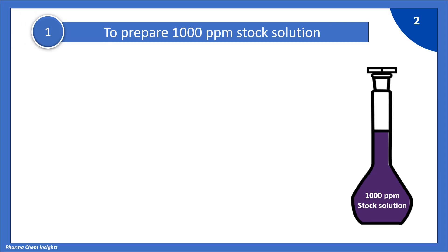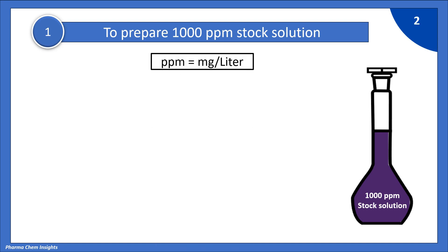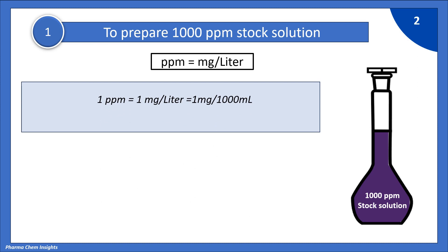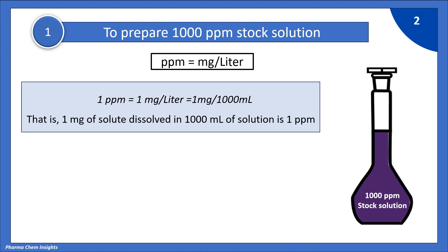First we will prepare 1000 ppm stock solution. PPM is equal to mg per litre. So 1 ppm is equal to 1 mg per litre, that is equal to 1 mg per 1000 ml — that is 1 mg of solute dissolved in 1000 ml of solution is 1 ppm.